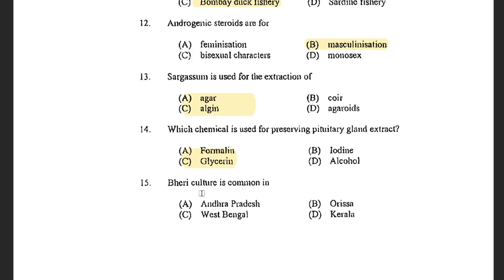Next question: Bheri culture is common in — options are Andhra Pradesh, Orissa, West Bengal, and Kerala. The answer is West Bengal, because bheris are most commonly found in West Bengal. Gheris are from Odisha, Pokkali fields are from Kerala, Kharlands are from Karnataka, and Khazans are from Goa.